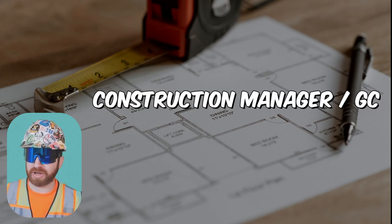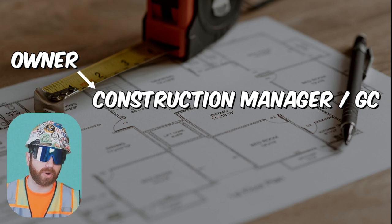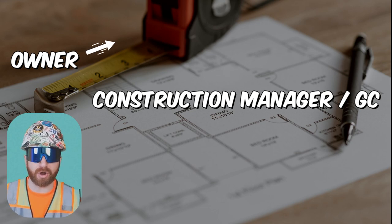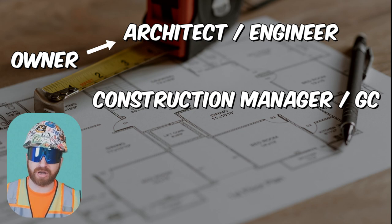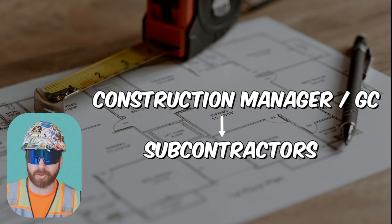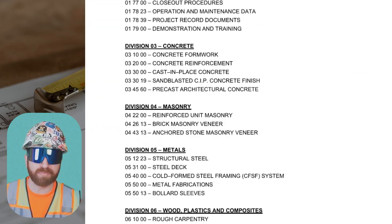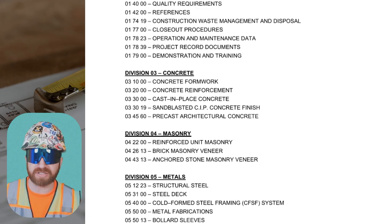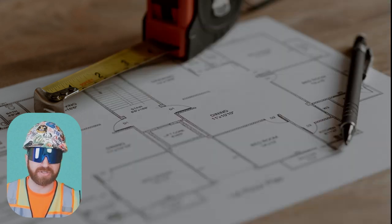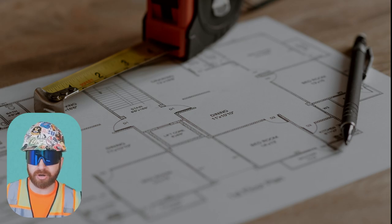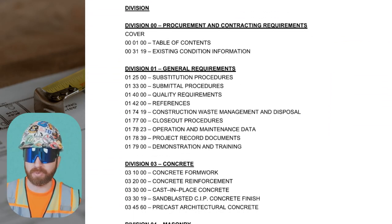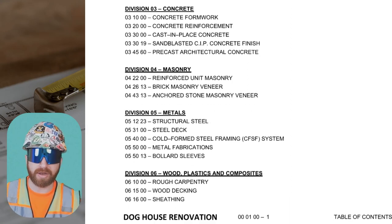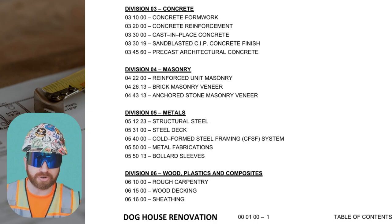The construction manager has been awarded the project by the owner and can now proceed with construction coordination. The owner has a separate contract with the architect and engineer firm. The CM has issued contracts to all the subcontractors for their applicable scope. The CM-to-subcontractor language will outline which specification sections the subcontractor is responsible for — meaning they must fulfill all the requirements of those sections. The required submittals are located within each specification section under their scope of work.